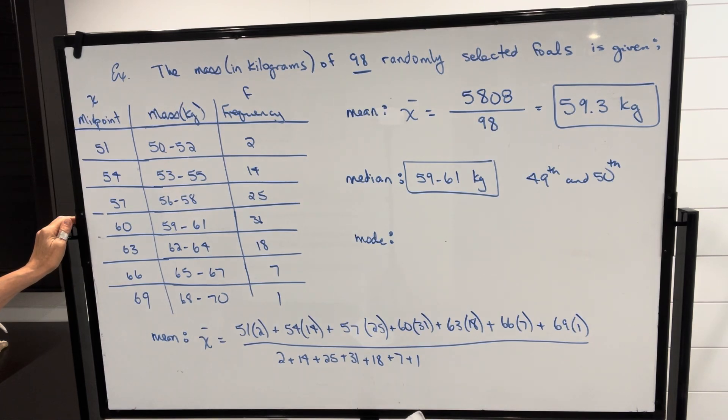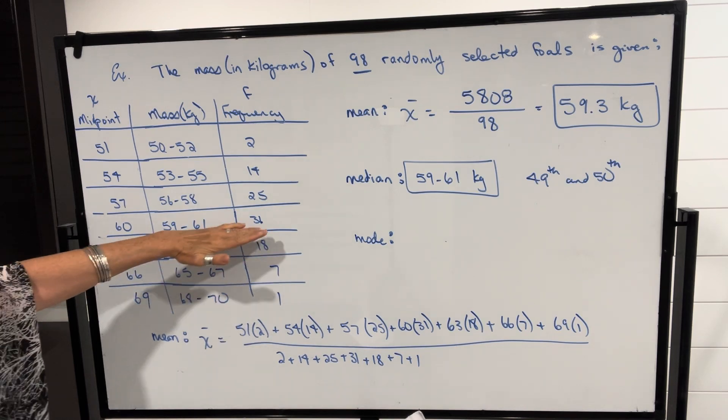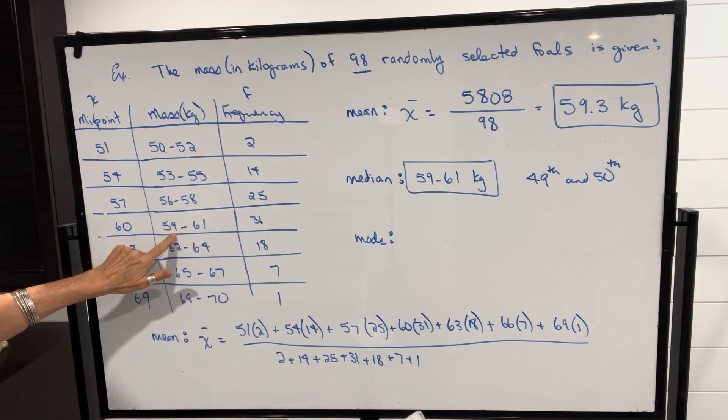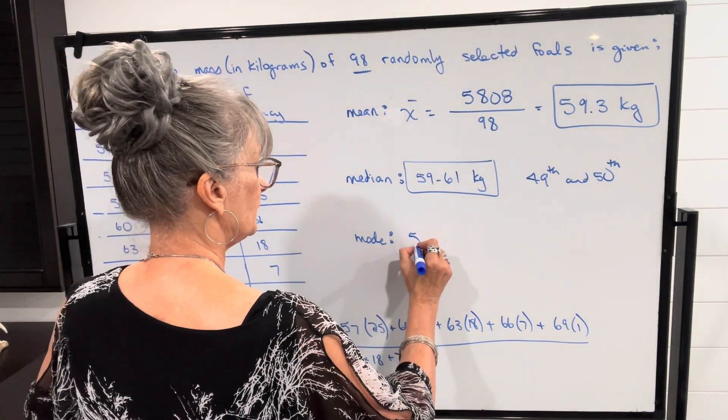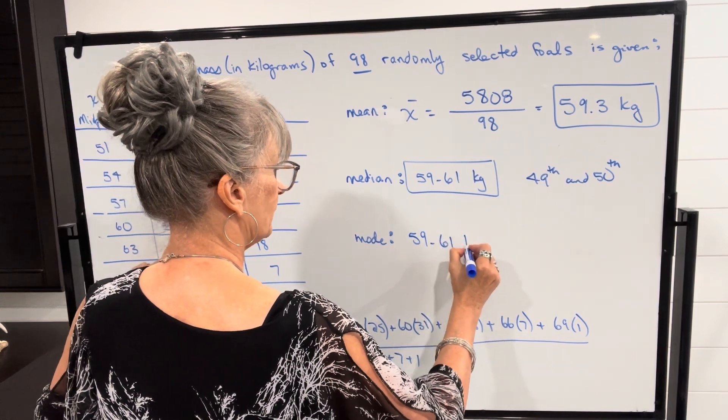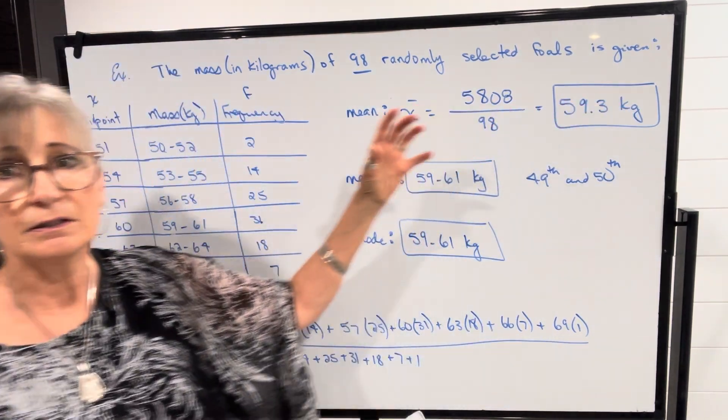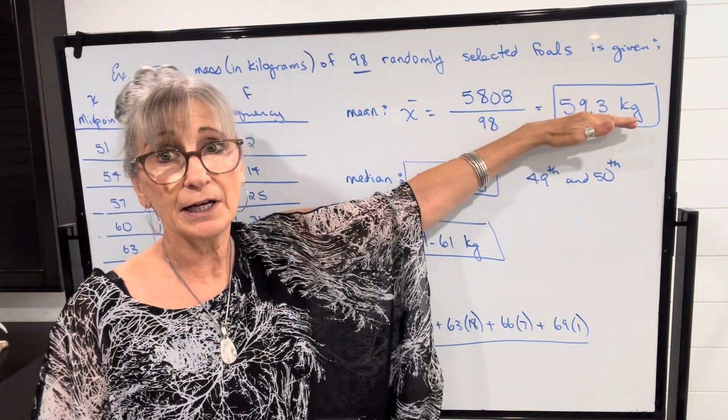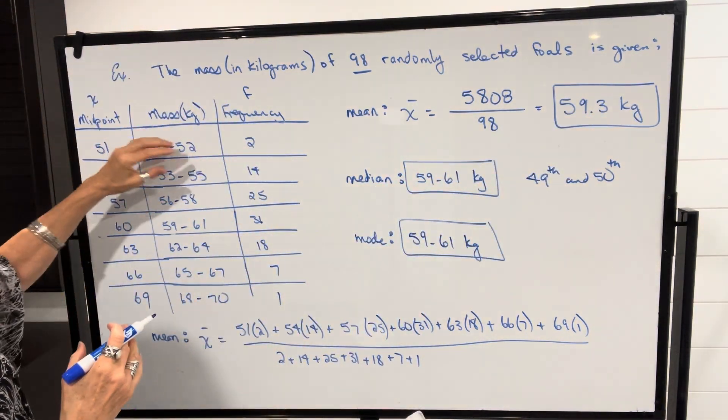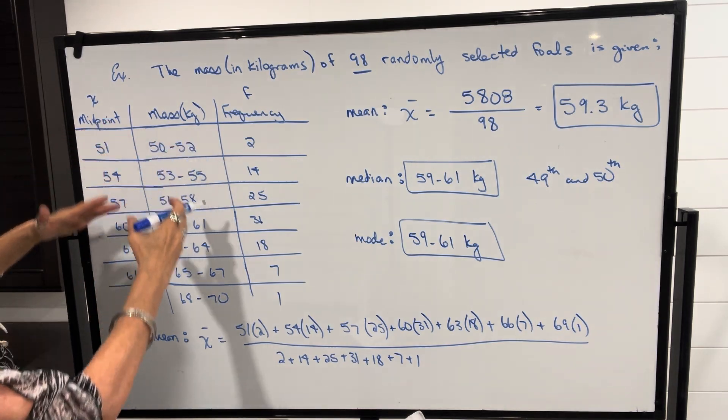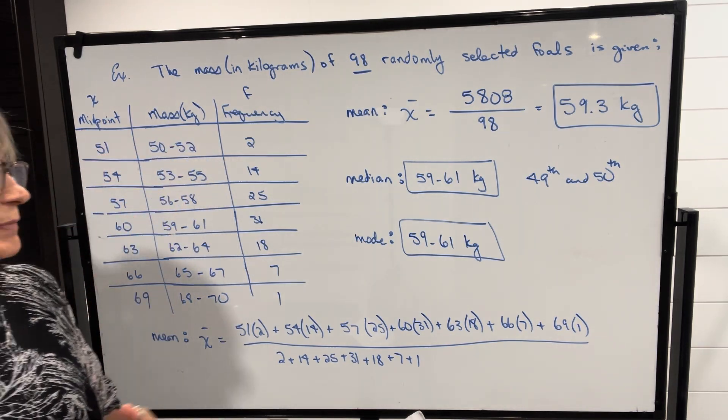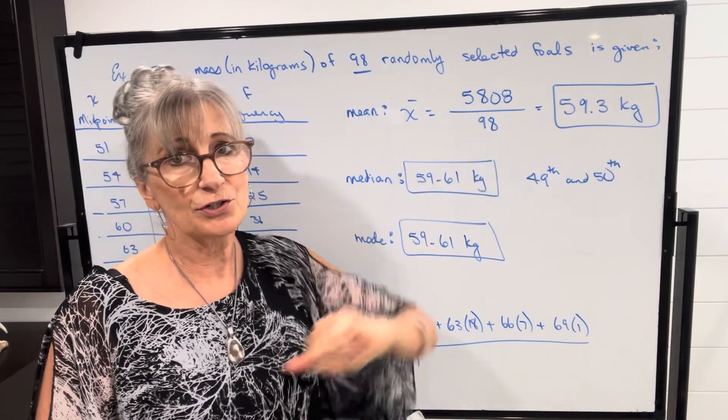And the mode would be the most popular, like what mass appeared most often. And that would be this category here, which is also 59 to 61 kilograms. The mean in a grouped data situation is not going to be really accurate because we don't know the exact values, all of those masses, but it's going to be our best approximation of the mean.